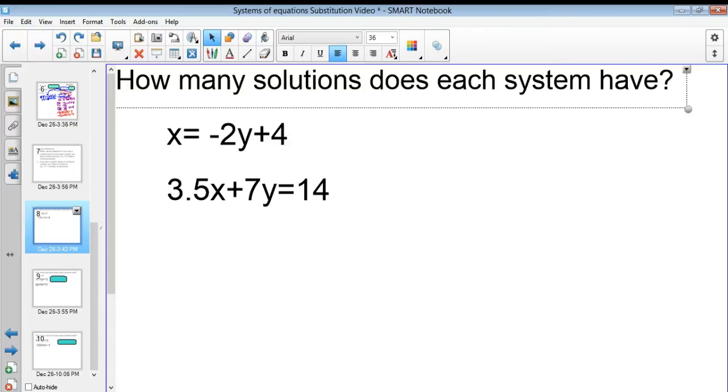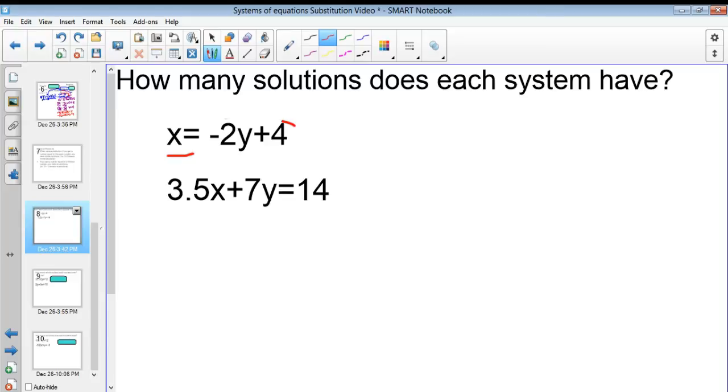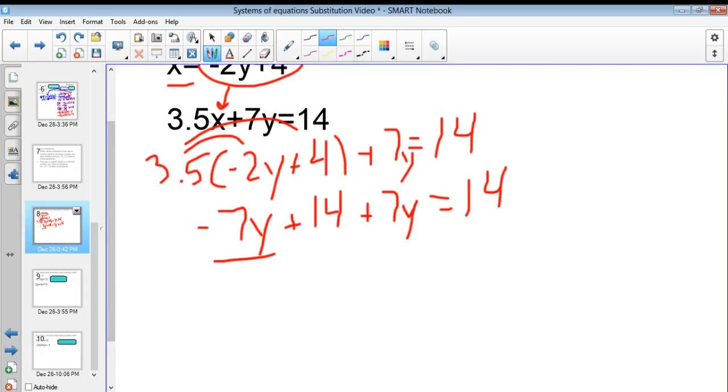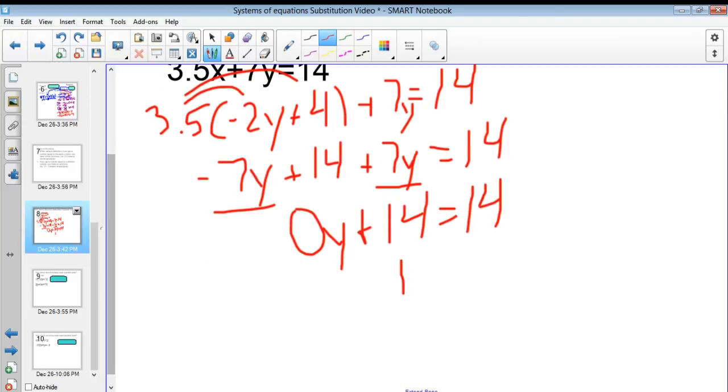So, let's look at one of those problems. So, here I have x equals negative 2y plus 4 and 3.5x plus 7y equals 14. Now, some of you might already know the answer here just based on this. But we're going to go into substitution. So, here I already have it solved for x. So, I'm going to plug this quantity right in for x. So, I have 3.5 times negative 2y plus 4 plus 7y is equal to 14. And then from there, I distribute the 3.5. I get negative 7y plus 14 plus 7y is equal to 14. And then I combine my like terms. And what do I see? Oh, my goodness. Negative 7y plus 7y. Well, that's equal to 0y.